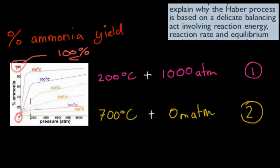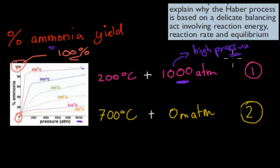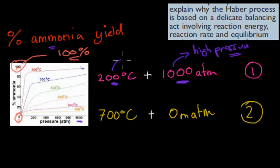If we look at what conditions we need to achieve 100% yield of ammonia, we need about 1,000 atmospheric pressure — really high pressure achieves that yield. And also a low temperature, which we discussed in previous videos, will also favor a higher percentage ammonia yield.